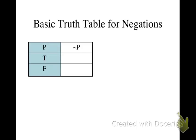This video will explain the basic truth table for negations. The truth table for negations is really simple. When P is true, not P is false. When P is false, not P is true.